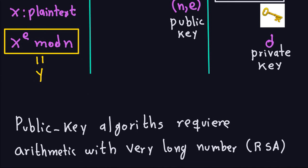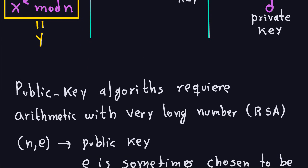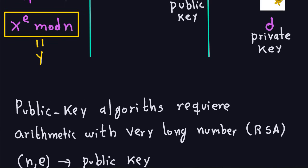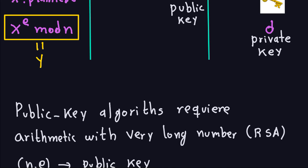Public key algorithms require arithmetic with very long numbers — this applies to RSA and others as well. You also need to compute fast exponentiation. If you have a lot of data to encrypt with RSA and no fast method for this exponentiation, it's going to take a long time, rendering RSA infeasible to implement. RSA very basically relies on the fact that we will have a method to compute modular exponentiation in a reasonable time.